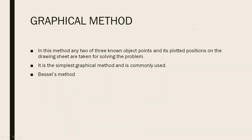This is the mechanical method, i.e., the tracing paper method. Next is the graphical method. The graphical method is the Bessel's method. Out of three objects, we have two points, and we can draw them on the drawing sheet. This is the graphical method, also known as the Bessel's method.